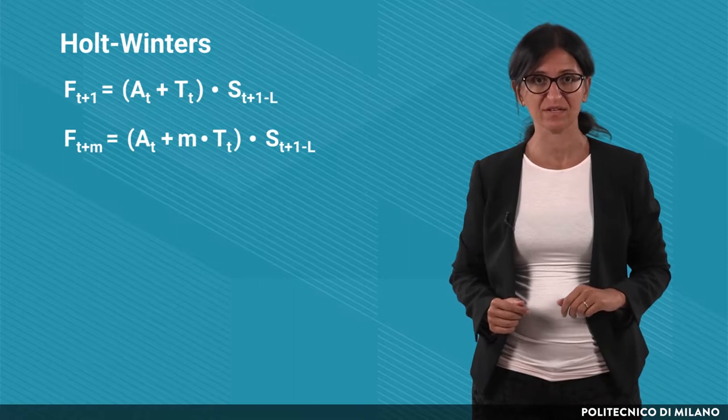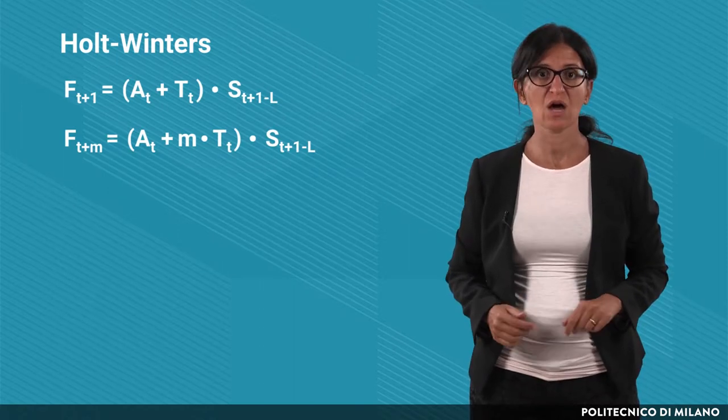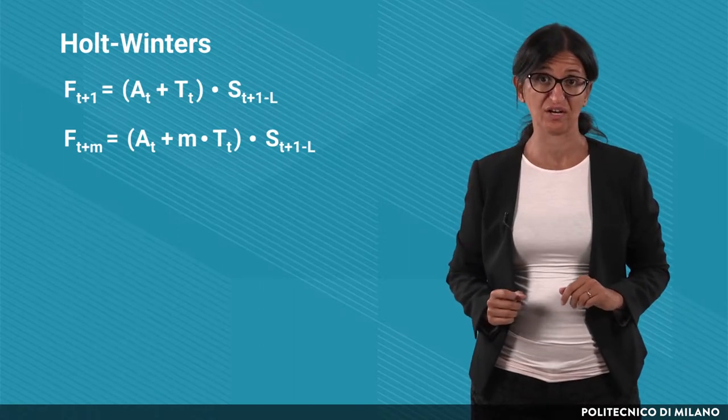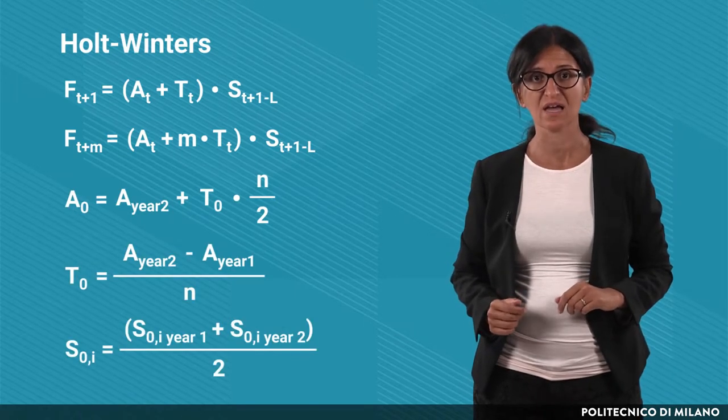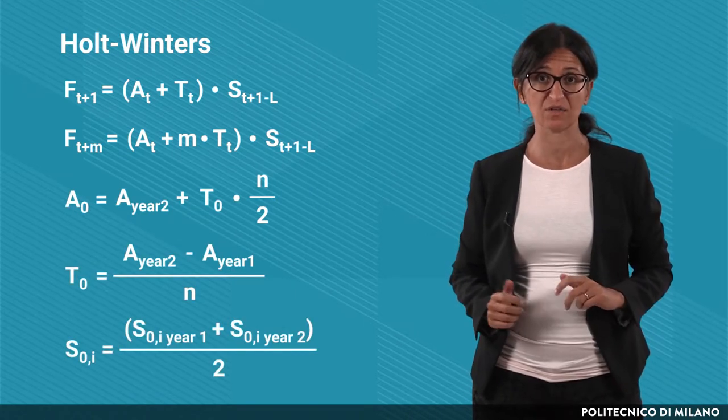In the previous lecture, we have seen how to forecast future demand with the Holt-Winters method by using three variables: the average, the trend, and the seasonal factors. We have also analyzed how to initialize these variables based on the time series of past demand. In this lecture, we are going to analyze how to apply the Holt-Winters forecasting method when new values of demand become available.